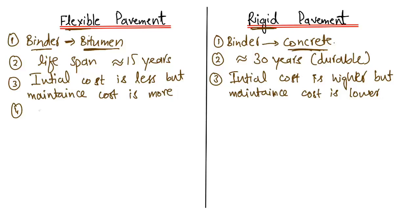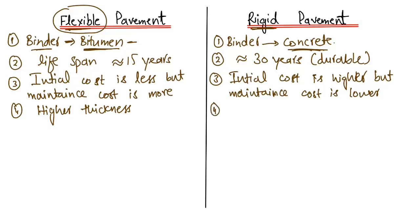The fourth difference is thickness. Flexible pavement is provided with a higher overall thickness because bitumen is used as the binder, so more thickness is needed to distribute the load from traffic down to the main ground layer. In contrast, rigid pavement uses a lower overall thickness, considering all layers: the ground layer, sub-layer, base layer, and surface layer.